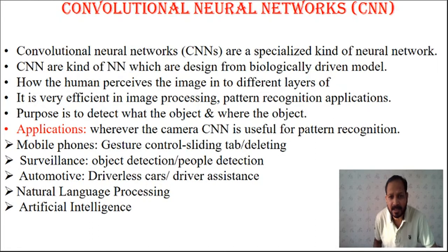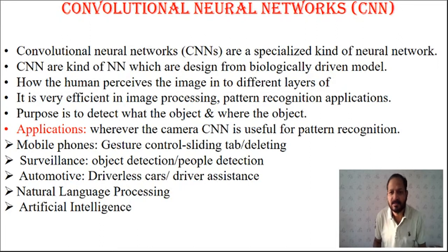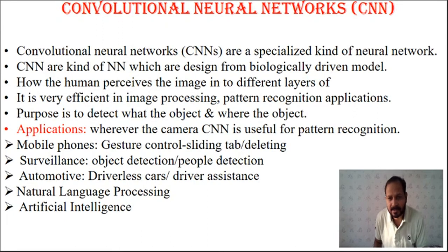CNNs are a specialized kind of neural network, different from normal or traditional neural networks. In traditional neural networks, features are extracted explicitly outside the network and then applied for classification. CNN performs both feature extraction and classification within the network itself. It is called a convolutional neural network because features are extracted by the process of convolution.